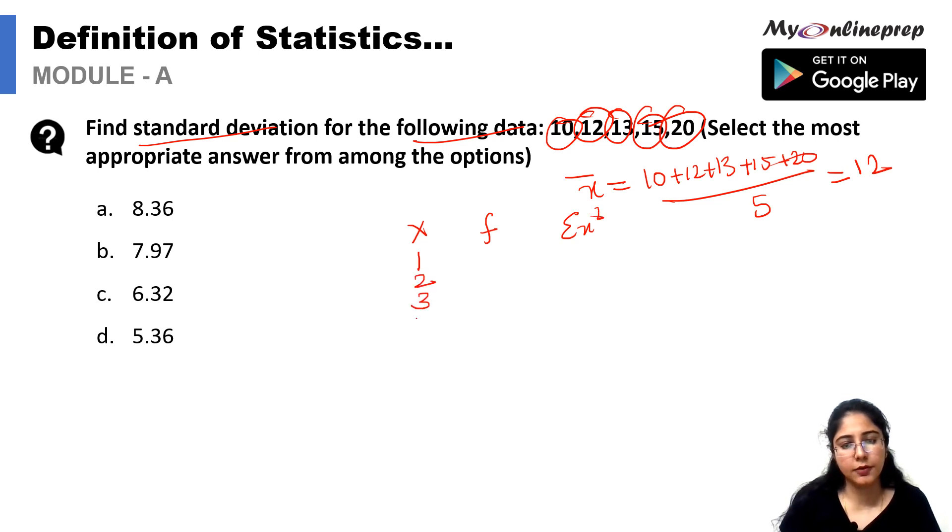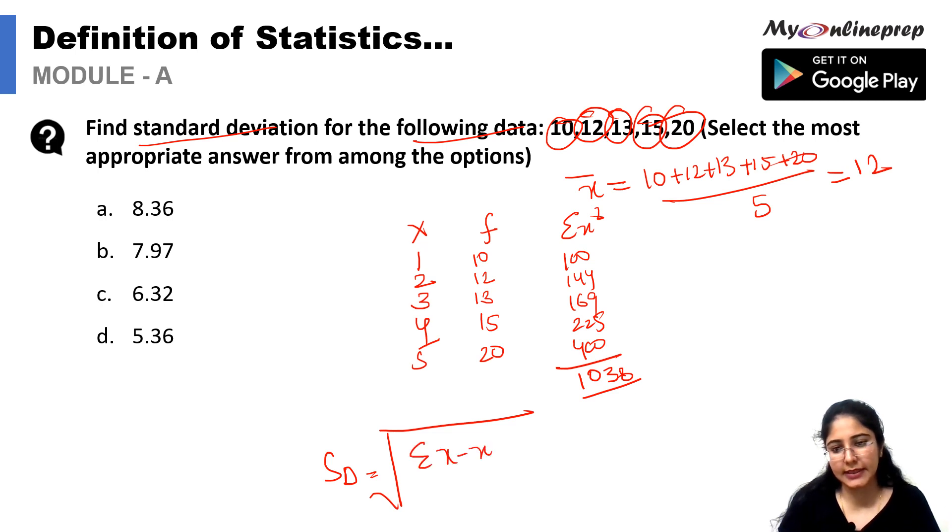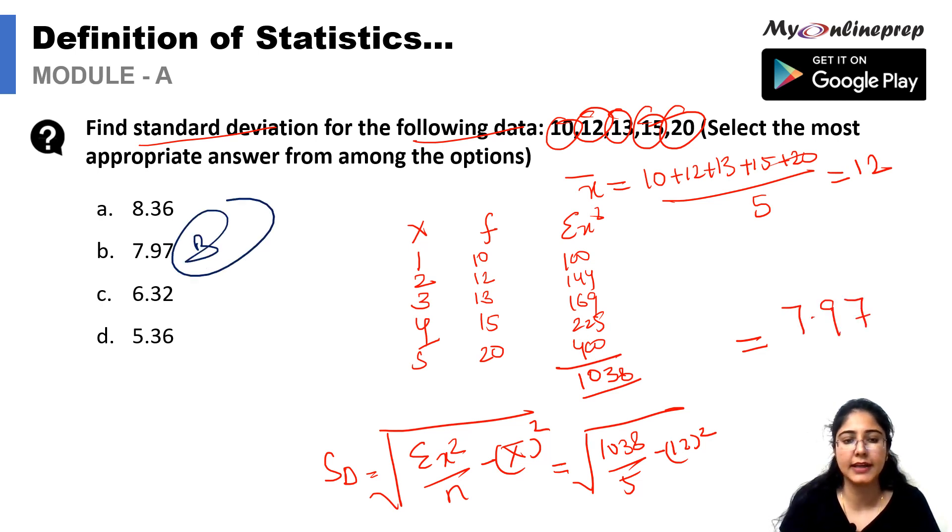Summation x square would be 100, 144, 169, 225, and 400. Total is 1038. Now we will apply standard deviation formula, that is summation of x minus x bar square, and you can also write this as summation of x square upon n minus x bar square, which equals under root of 1038 upon 5 minus 14 square. Solving this, your answer is 7.97. We can say that for this answer, option B is correct.